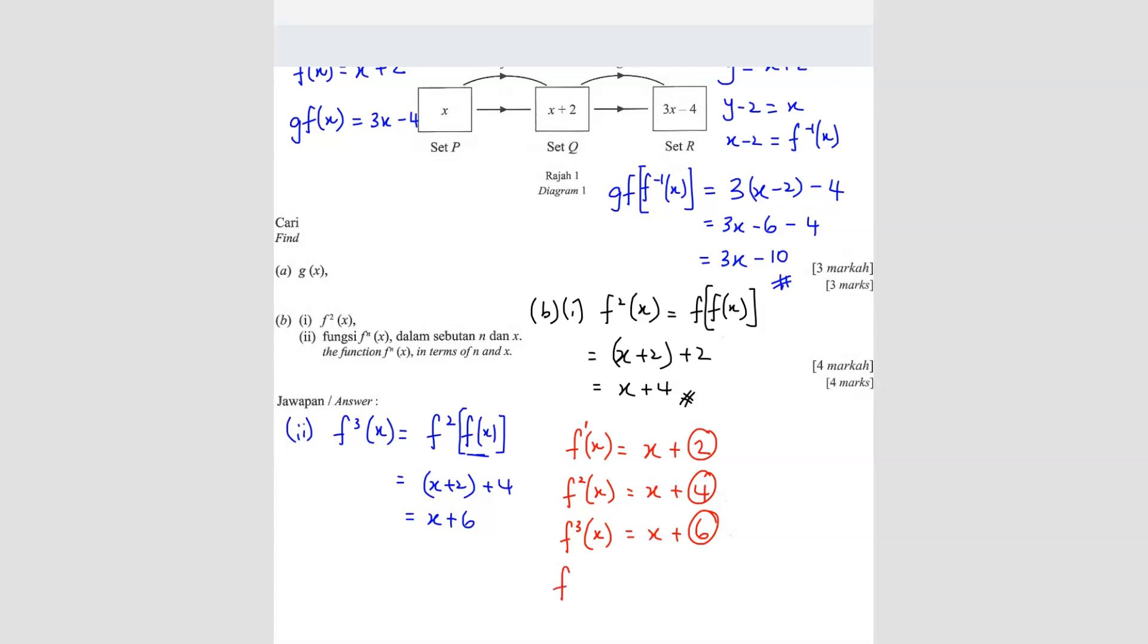So that means if I'm finding for fn, it will be equal to x plus 2 times n. So this is your answer. So they say find the function fn in terms of n and x. So this is your answer.